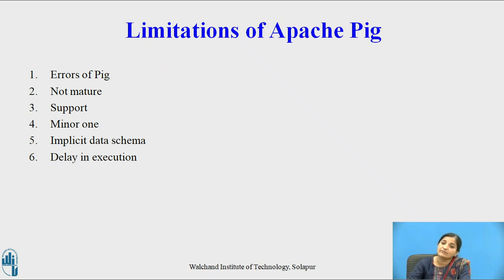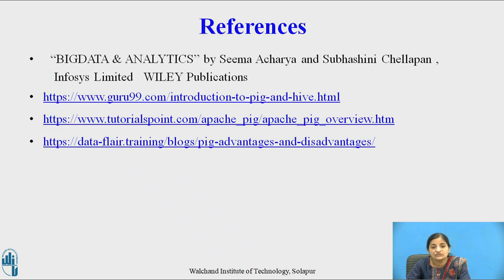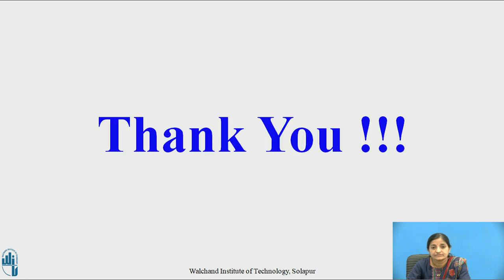Now let us see some of the limitations of Apache Pig. Pig's errors are not easily interpretable or resolved. Apache Pig is not fully matured and does not support many other platforms. It has an implicit data schema, and there is a delay in execution because MapReduce jobs written in Pig Latin scripts execute more slowly compared to MapReduce jobs written in Java. Thank you.